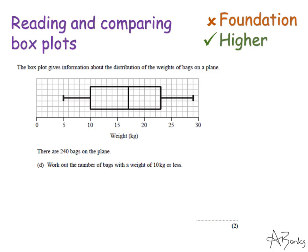This last question is slightly trickier. It's expecting you to understand what the lower quartile, what the median, what the upper quartile are actually showing you. So this says there are 240 bags on the plane. Work out the number of bags with a weight of 10 kilograms or less. So if you look at the 10 kilogram mark, it's actually the lower quartile.